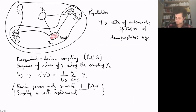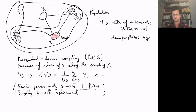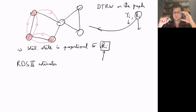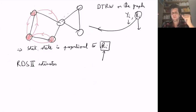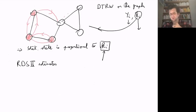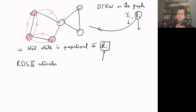The naive estimator is highly biased and causes trouble when attributes are correlated with node degree. For example, if the probability of being infected by a disease correlates with degree, the naive estimator will overestimate disease prevalence in the population. This illustrates why degree-corrected estimators like RDS-2 are necessary for valid inference.